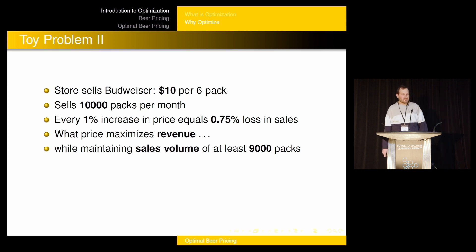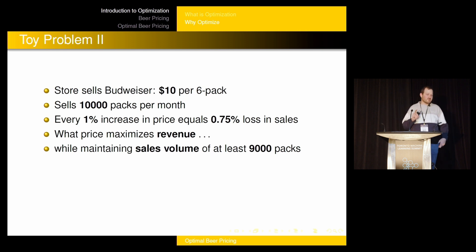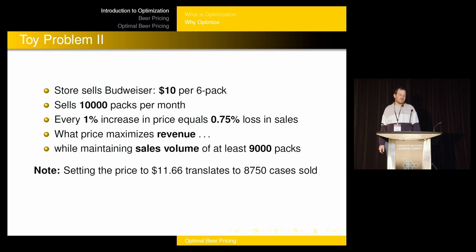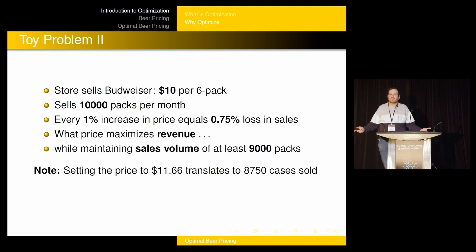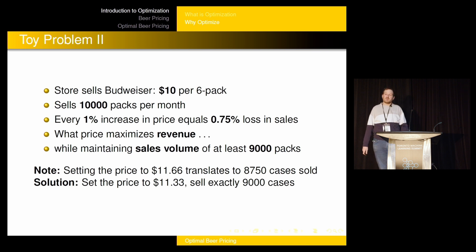Let's make it a little bit harder — I'm going to add a constraint. The constraint is that you want to maintain a sales volume of at least 9,000 packs, starting from 10,000. If you set the price to the unconstrained optimum of $11.66, you'd only sell 8,750 cases — not quite enough. Maybe you have contracts requiring you to sell at least 9,000 cases a month. In this case, you'd set the price to $11.33. You'll sell exactly 9,000 cases, and $11.33 is the price you want to set.